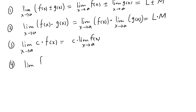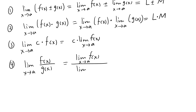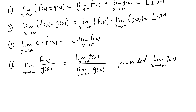The limit of the quotient is the quotient of the limits, provided that the limit of the denominator is not zero. So this would be L over M. The constant multiple rule gives c times L.